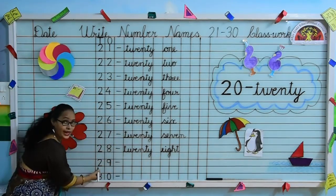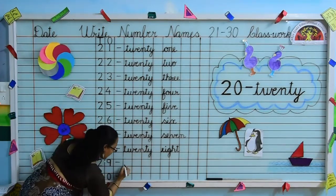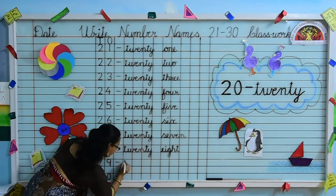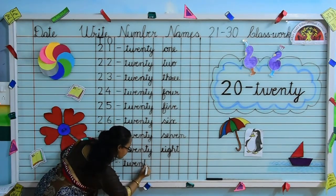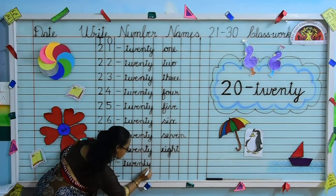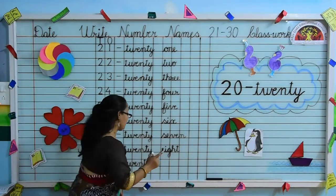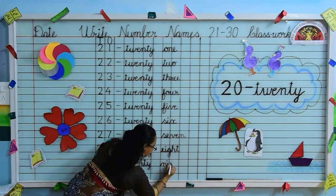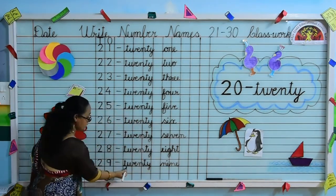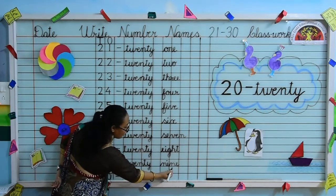Yes kids, move to next number. 2, 9 — 29. What we will write here? Yes, the spelling of 20. So kids, speak and write. T-W-E-N-T-Y, 20. Now, what I write here? Yes, the spelling of 9. Write N-I-N-E, 9. T-W-E-N-T-Y, N-I-N-E, 9.